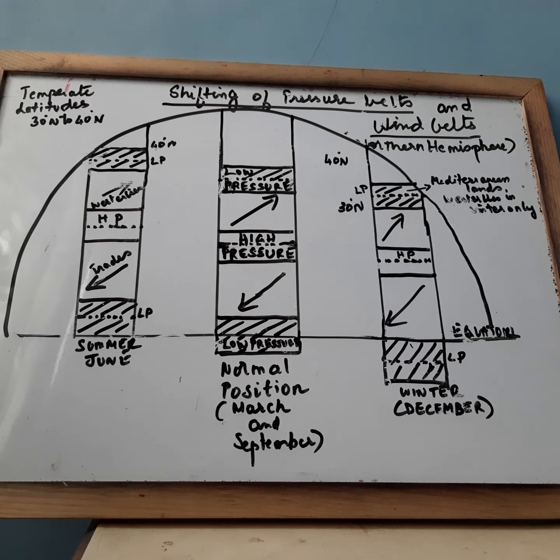In June when the overhead sun is over the Tropic of Cancer, all the belts move about 5 degree to 10 degree north of their average position. The Mediterranean parts of the southern continents then come under the influence of the westerlies and receive rain in June, that is winter in Southern Hemisphere.